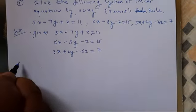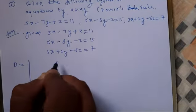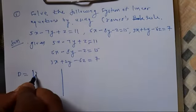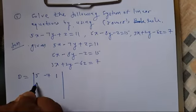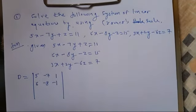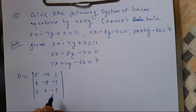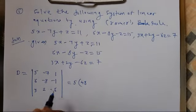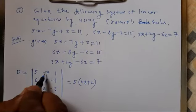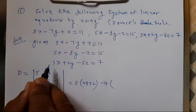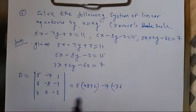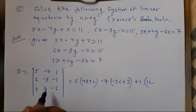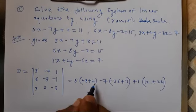As per the theory, first I will write determinant D — the coefficients of x, y, z in all equations. So D = |5, −7, 1 / 6, −8, −1 / 3, 2, −6|. Simplifying: 5·(48+2) minus (−7)·(−36+3) plus 1·(12+24), which gives 55.